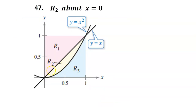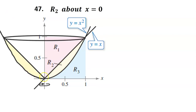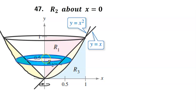For number 47, we will rotate the yellow region R2 around the y-axis. When you rotate R2 around the y-axis, it makes a solid that's like a bowl with a cone carved out of the top. A slice of the solid will be a washer, a disk with a hole in it. We can use washers like this one to find the volume of the solid. Because the washers are stacked vertically, ultimately we will have to integrate with respect to y. Therefore, instead of using x squared, we will use the square root of y. For the line, we will simply use y.